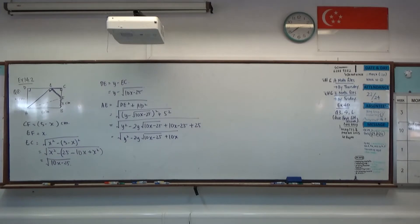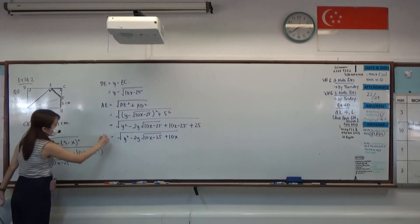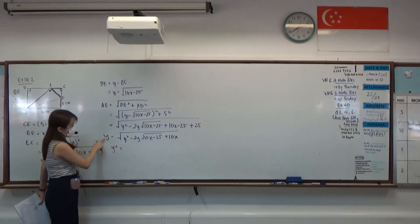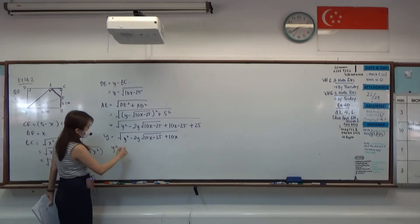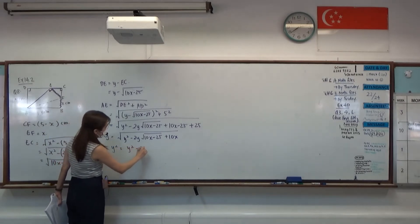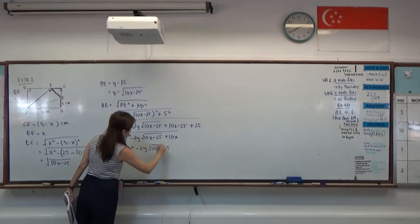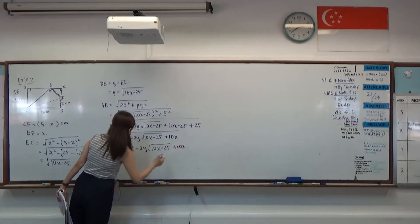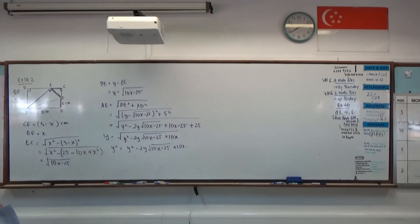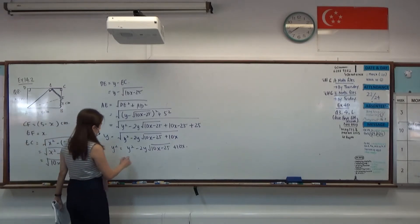So we get an expression in terms of AE to be that way. Then after that, notice that when you fold this paper, we see that EF is actually equals to this. So the other side, Y cm, is actually the same length as this part here. So my AE is actually Y. But I need to convert it into X. So when I have Y equals to this, Y squared is actually equals to Y squared minus 2Y square root 10X minus 25 plus 10X.